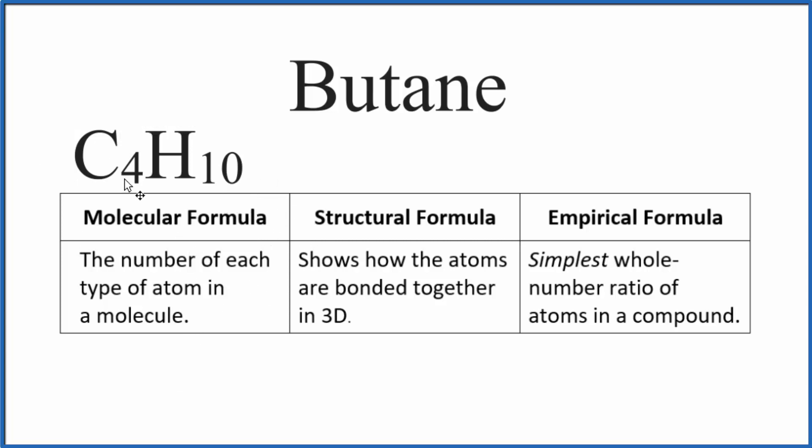This is nice because it tells us how many carbon atoms and hydrogen atoms we have, but it doesn't tell us how they're bonded together. For that, we need the structural formula. That looks like this.